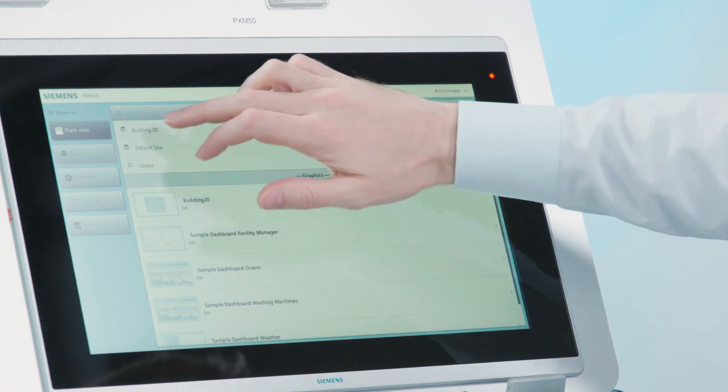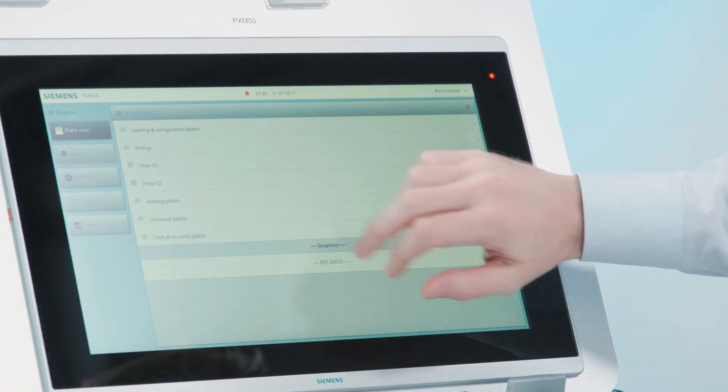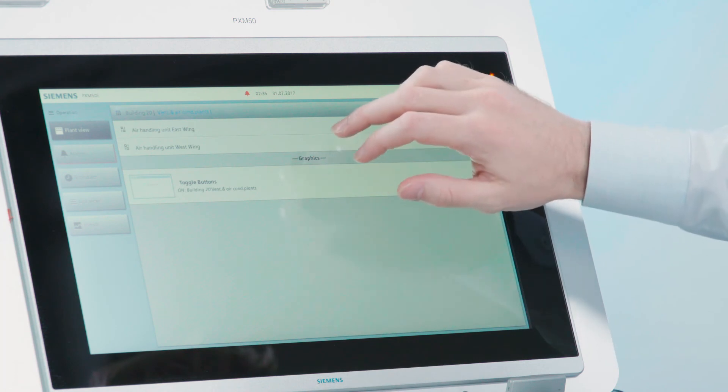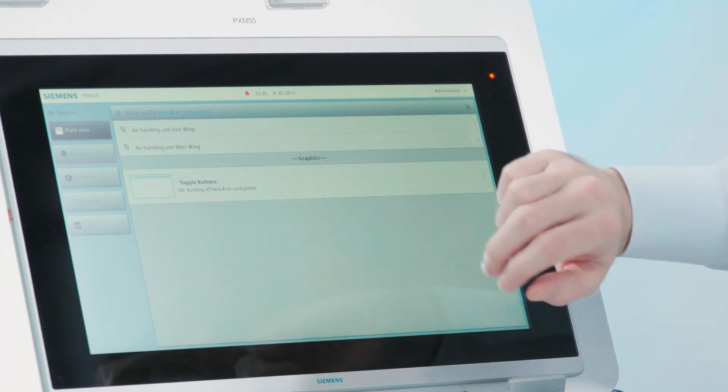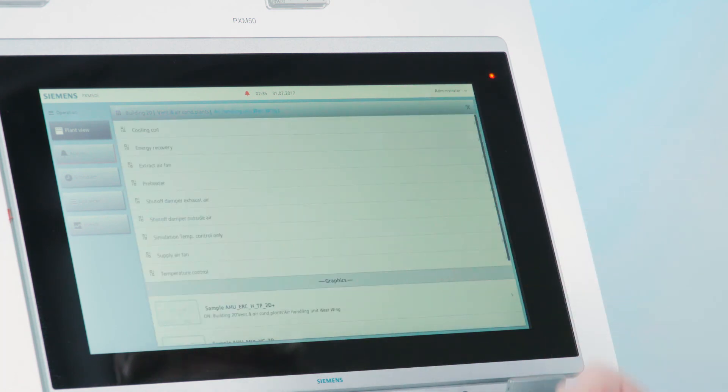We see that the data that we've just imported has already populated our views. I can now navigate down into Building 20, and go to inspect one of the ventilation and air conditioning plants.